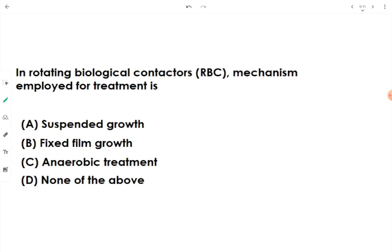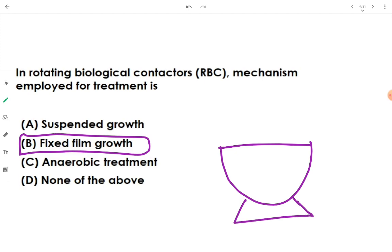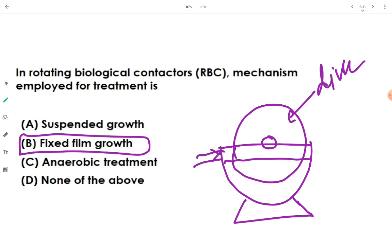In the rotating biological contactor RBC, the mechanism employed for treatment is fixed film growth. RBC is a fixed film growth biological reactor in which a tank is provided and on a shaft several discs are provided. This disc is about 40 percent submerged in the wastewater. Wastewater acts as the influent in the tank, and inside the tank, over the shaft, number of discs keep rotating at very small RPM.